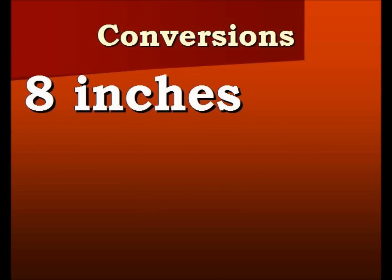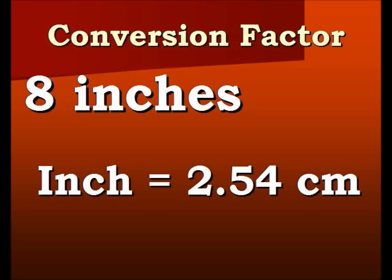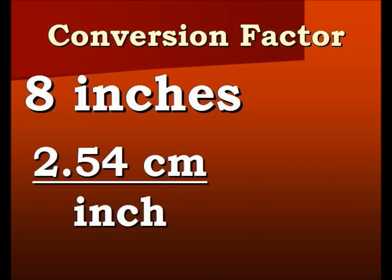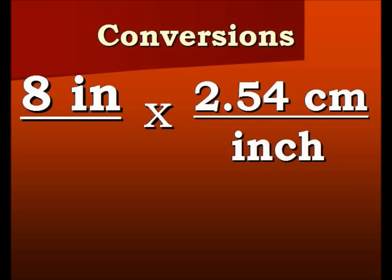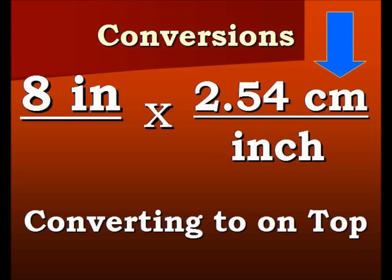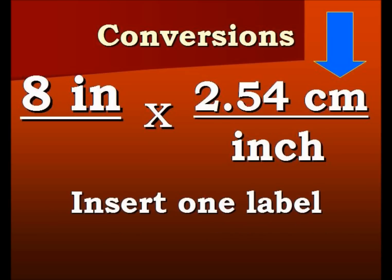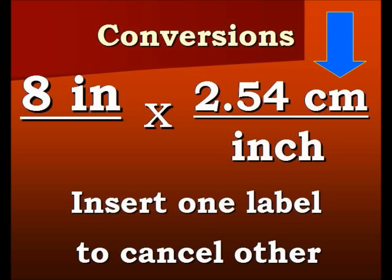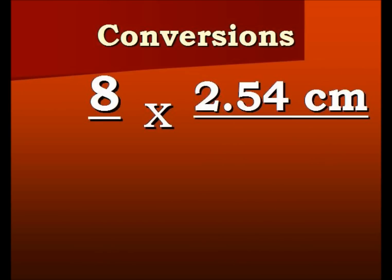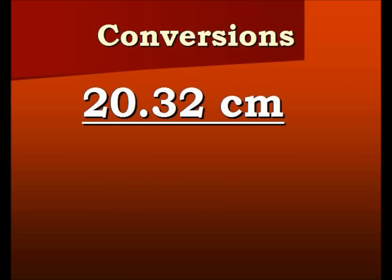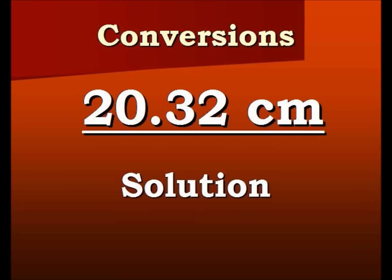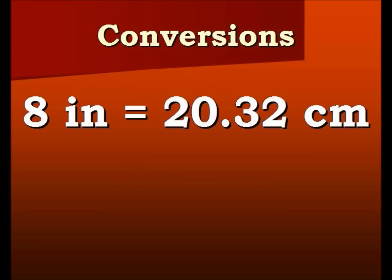Now to set up the problem, we have our conversion factor. We're going to turn it into a fraction and multiply it into 8 inches. Notice what we're converting to is on top: 2.54 centimeters over 1 inch. We insert one label to cancel the other — the inches cancel out. We're left with 8 times 2.54 centimeters. So our solution is 20.32 centimeters equals 8 inches.